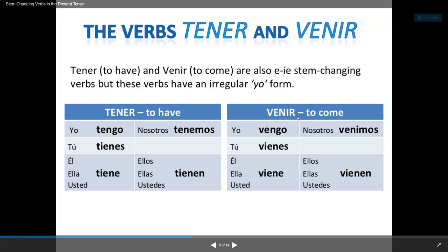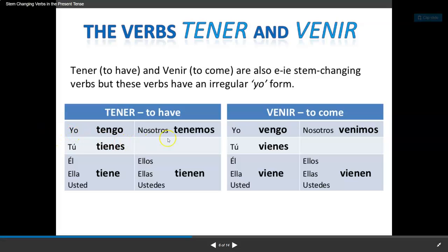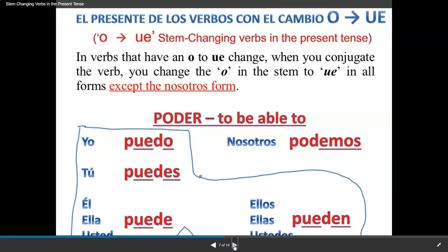Someone may ask: why are these not boot verbs? Because the boot wouldn't work — tener and tenemos would both be excluded from the boot. If you are just looking at E to IE, you can stop here. If you'd like to go on, I'll show you the other verbs. For the Nearpod, you will only be required to do the E to IE section.